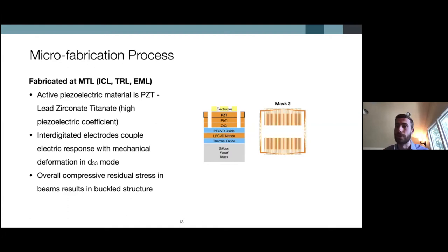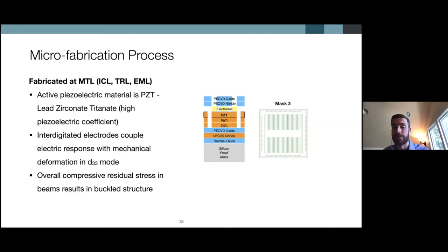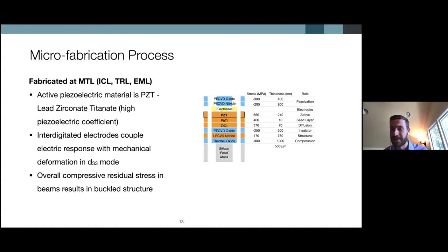On top of the PZT we have gold electrodes patterned in an interdigitated — interlocked finger-type — pattern, only on the top side of the PZT. The PZT operates in d33 mode, where axial strain results in the piezoelectric effect, so we only need electrodes on the top surface to capture the signal. We then deposit silicon nitride and silicon oxide on top, etch down to the electrode pads to uncover them for probing, etch all the way down to the silicon proof mass, and from the back side etch to release the beams and frame. The overall compressive residual stresses result in the buckled structure of the device.